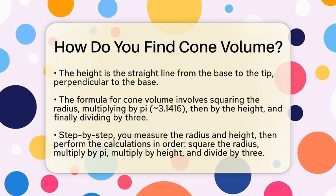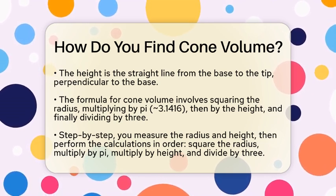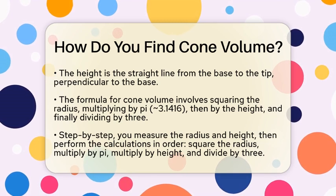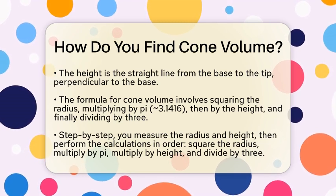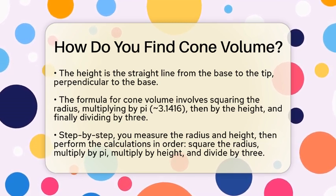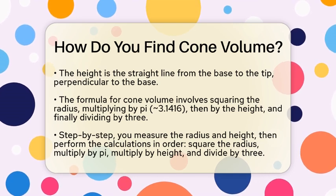Now square the radius by multiplying it by itself. For example, if the radius is four centimeters, then four times four equals 16. Next, multiply that by pi, which gives you about 50.2656.